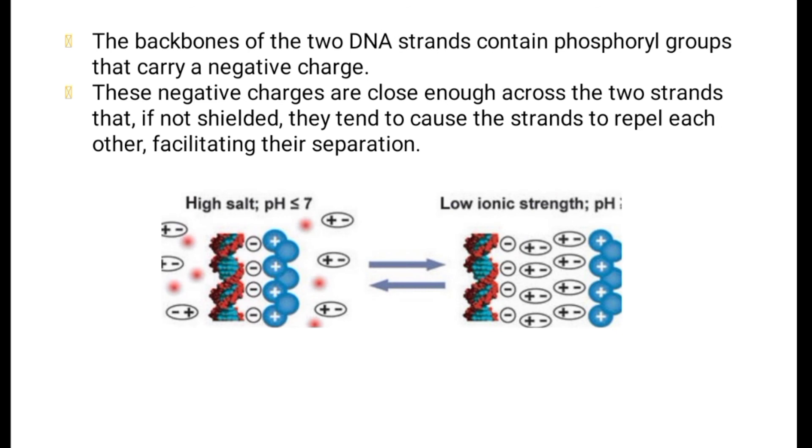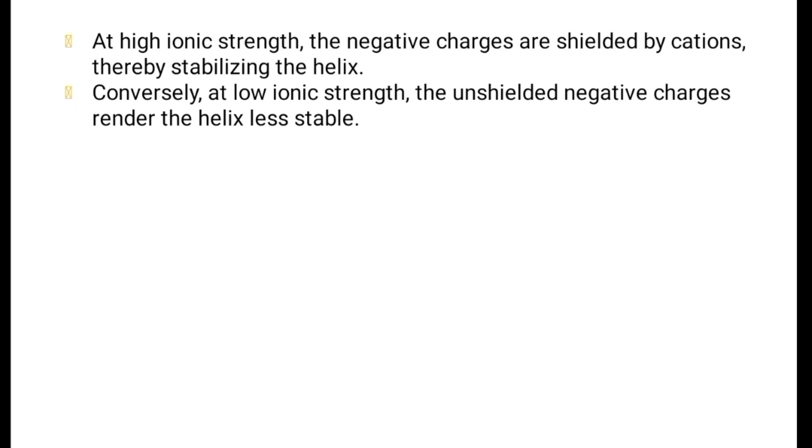The backbones of the two DNA strands contain phosphoryl groups that carry a negative charge. These negative charges are close enough across the two strands that, if not shielded, they tend to cause the strands to repel each other, facilitating their separation. At high ionic strength, the negative charges are shielded by cations, thereby stabilizing the helix. Conversely, at low ionic strength, the unshielded negative charges render the helix less stable.